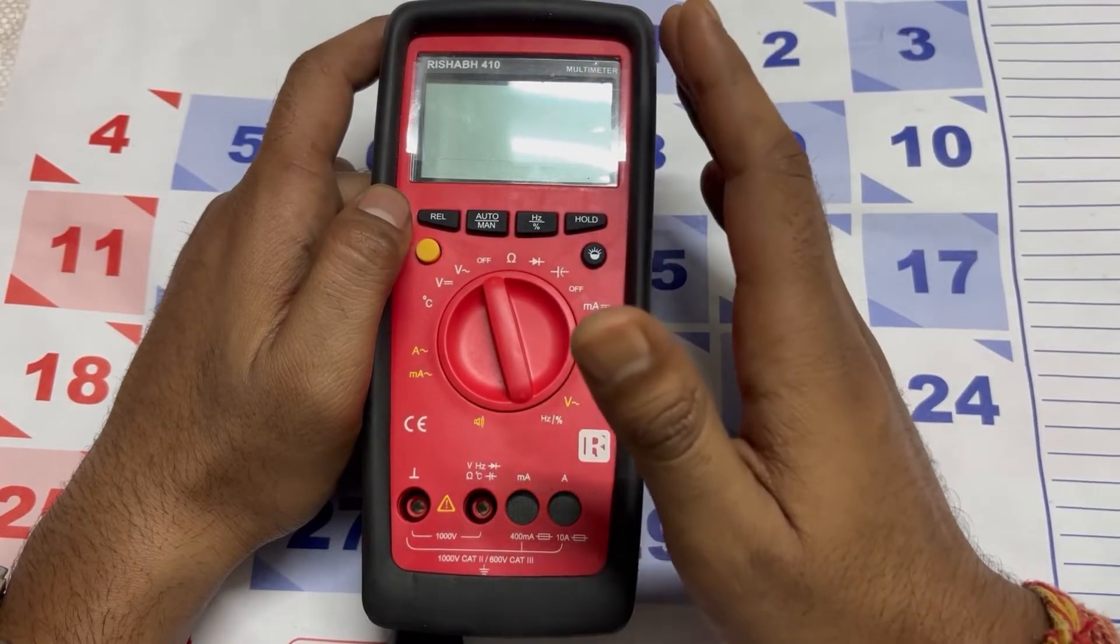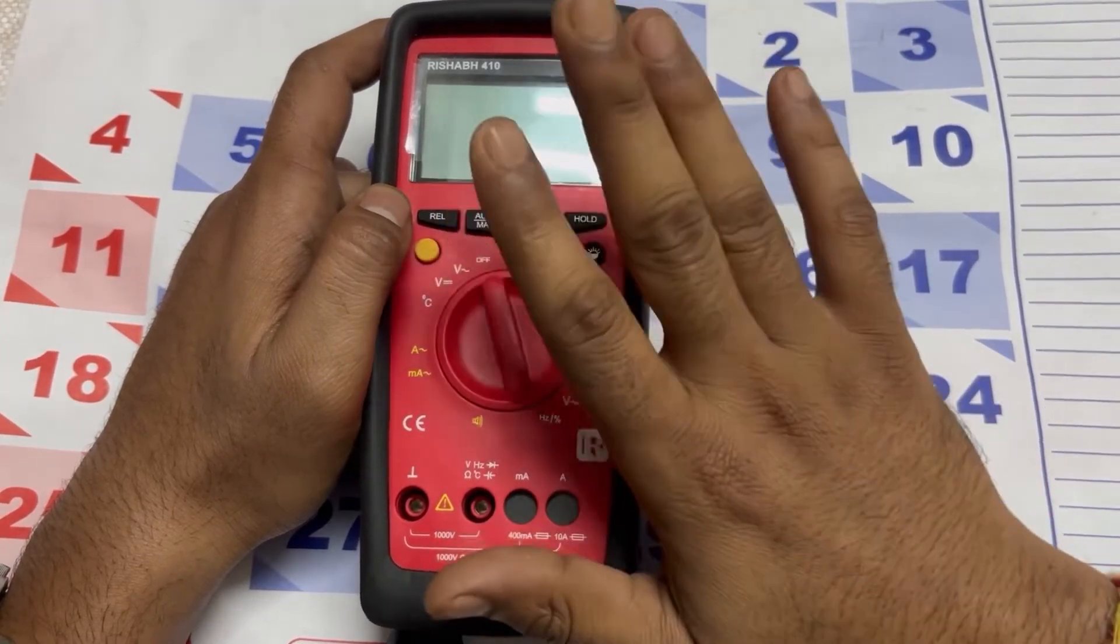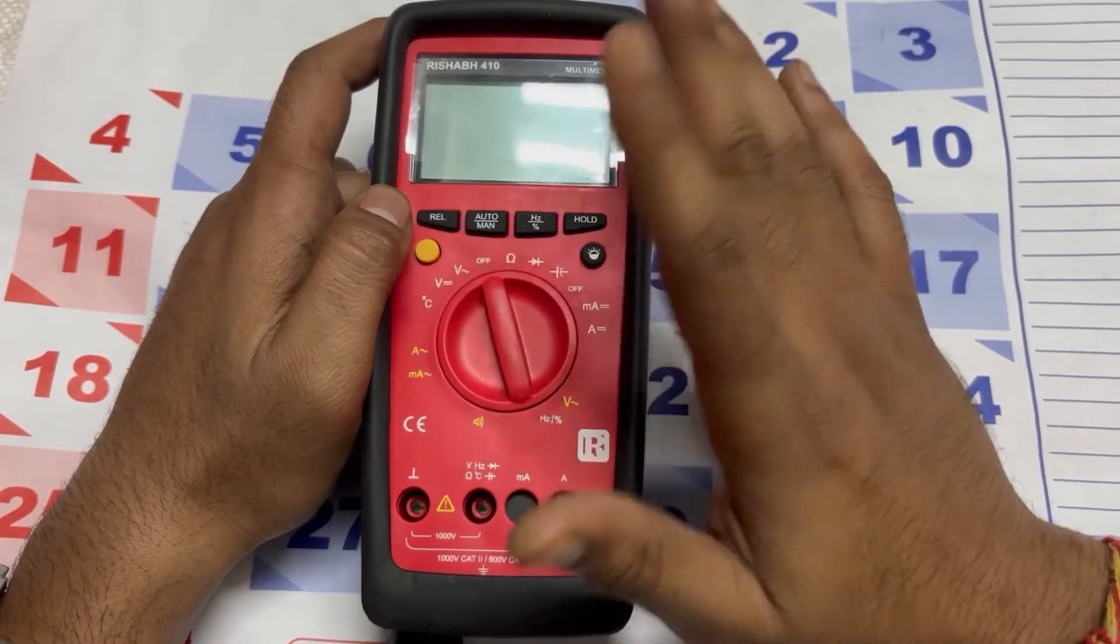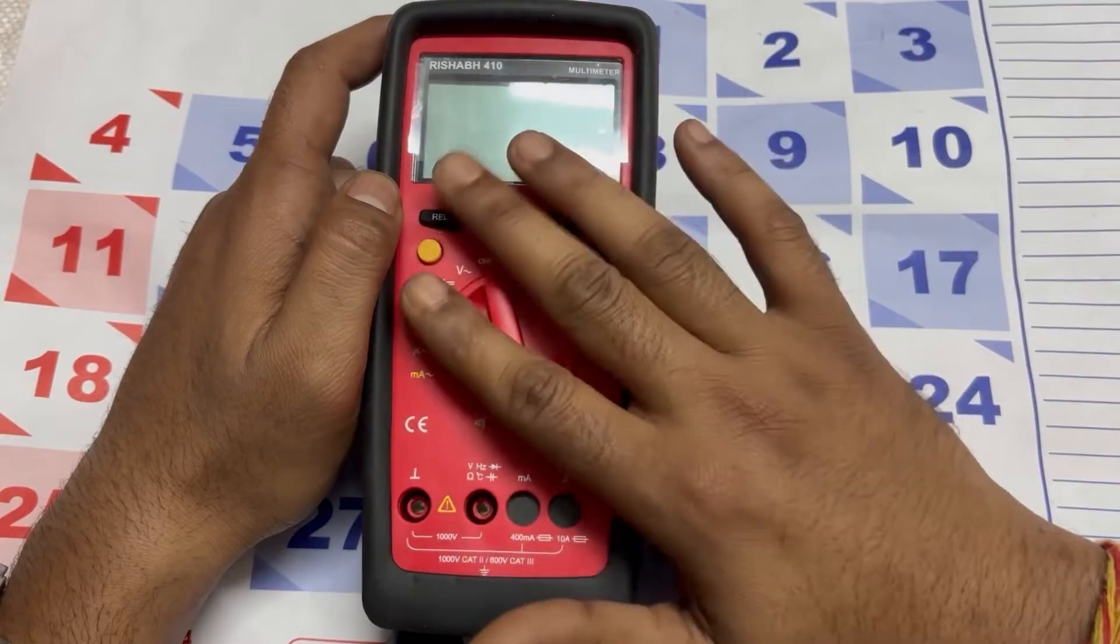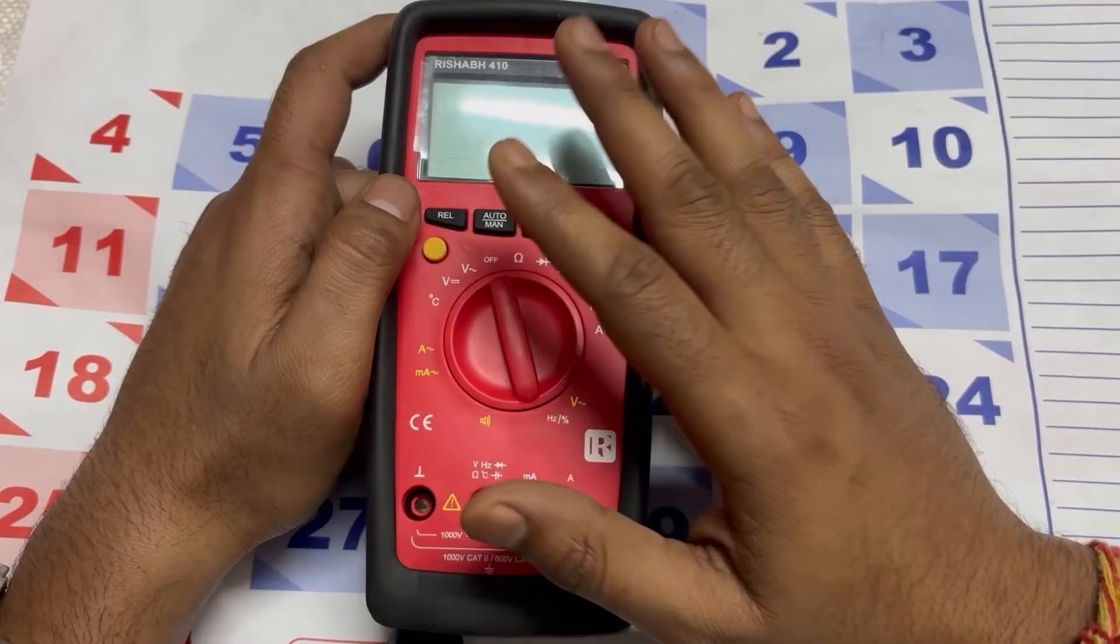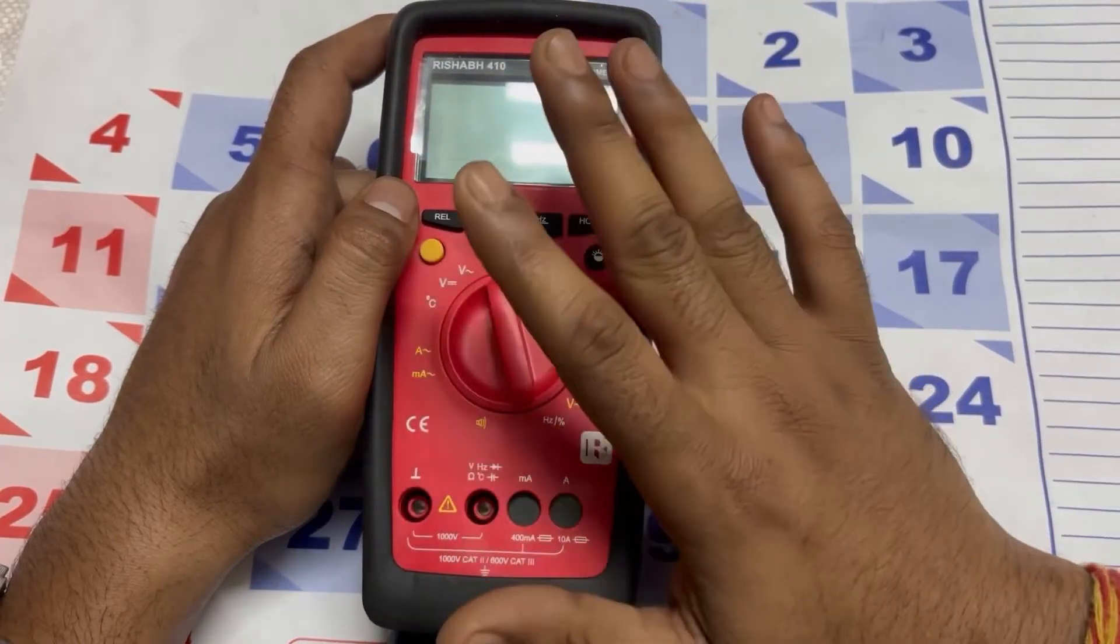Here you can see a display - that is an LCD display to show measurement readings clearly. This multimeter is capable of measuring AC to DC voltage, AC to DC current, resistance, capacitance, frequency, and possibly other parameters. It automatically selects the appropriate range for the measured quantity, making it easier for the user.